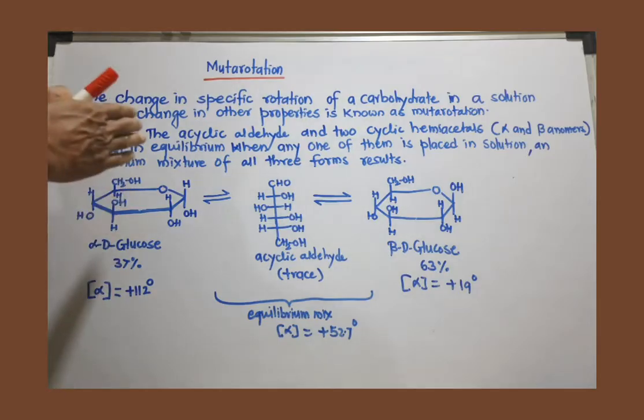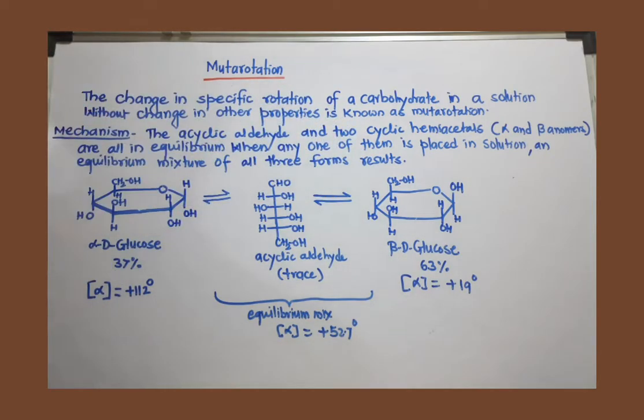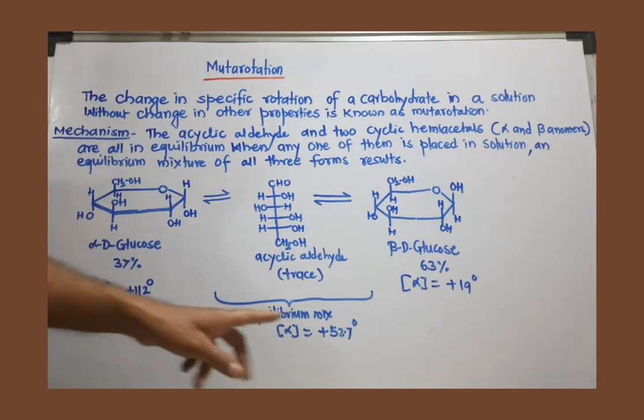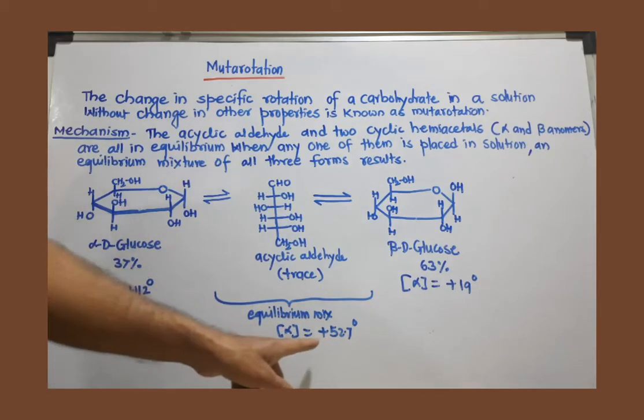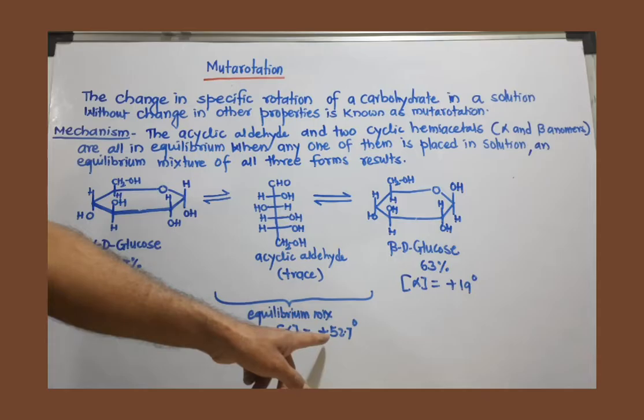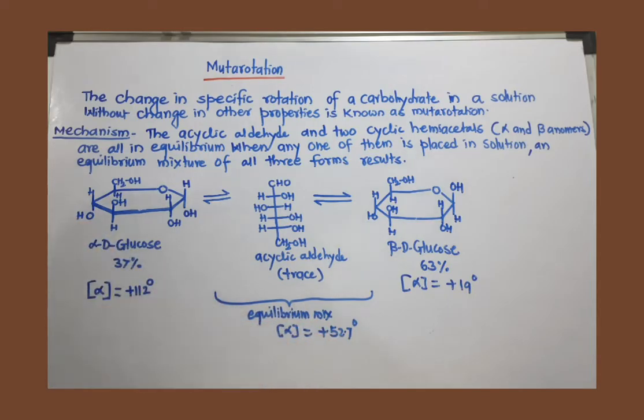But when you take alpha or beta separately, prepare its aqueous solution, and then measure the specific rotation, what will happen? Its specific rotation is going to change. For alpha, it decreases from +112 degrees and remains constant when it reaches +52.7 degrees.